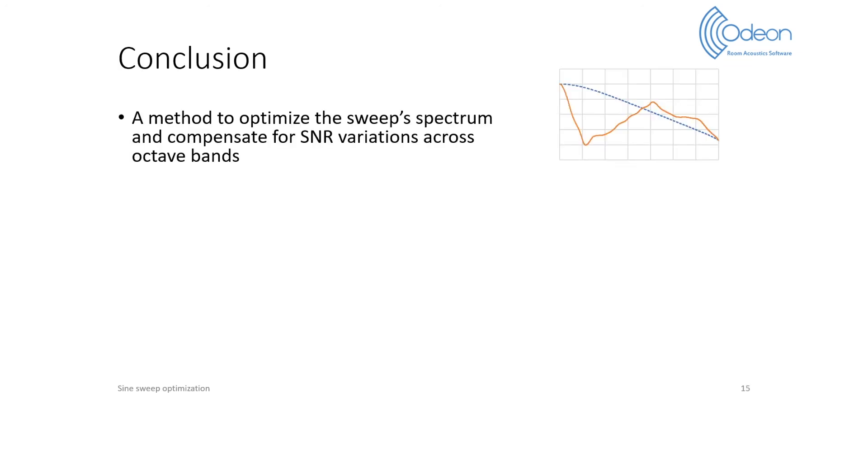In conclusion, we have presented a method to optimize the sweep spectrum and to compensate for SNR variations across octave bands. The method is based on a pilot impulse response measurement to estimate the SNR distribution using the decay range.